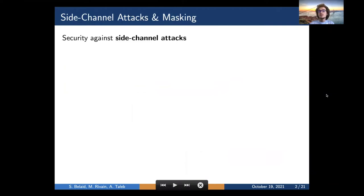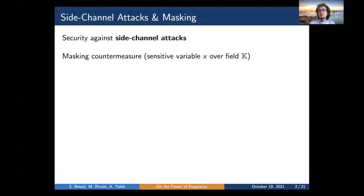In this work, we reason about the security of implementations against side-channel attacks, which are attacks that derive information about the secret from measurements such as power consumption or electromagnetic radiations. The most deployed countermeasure is the masking scheme: the idea is to split the sensitive variable into N values called shares, and the recombination gives the original secret. This breaks the dependence of the secret with any set of N-1 shares, making it difficult to recover the secret as N grows.